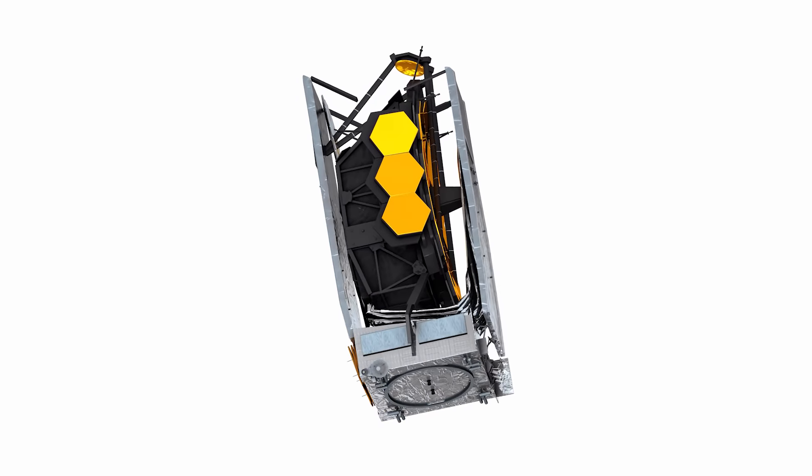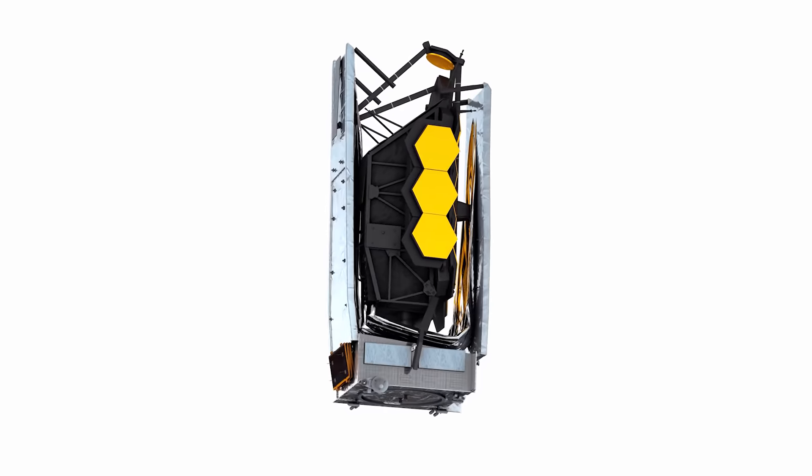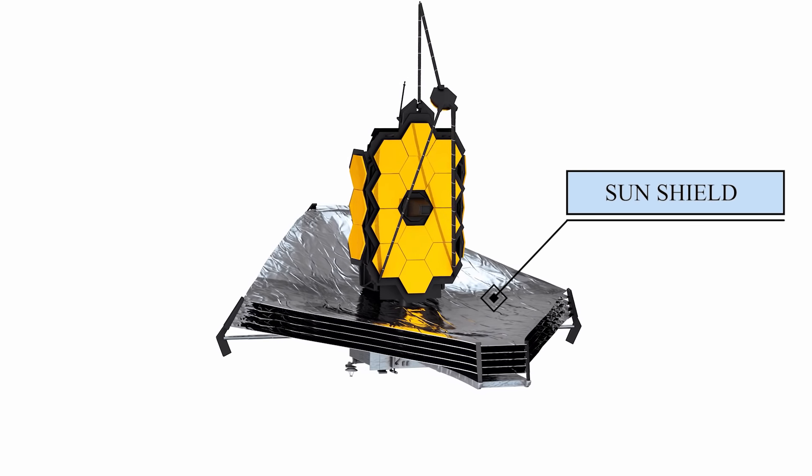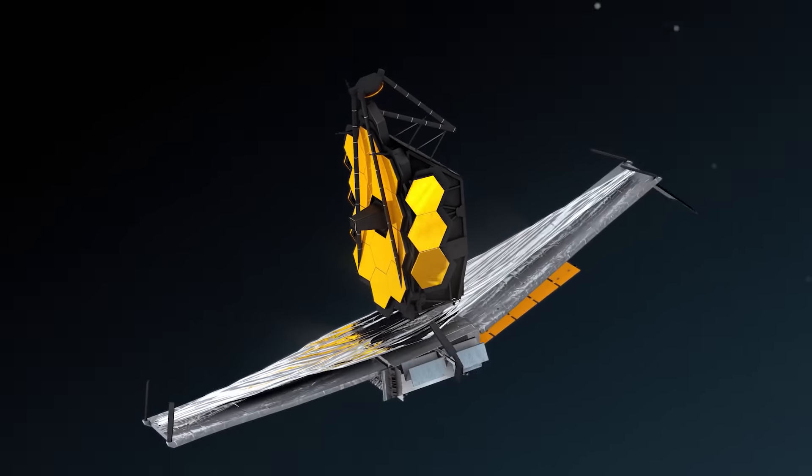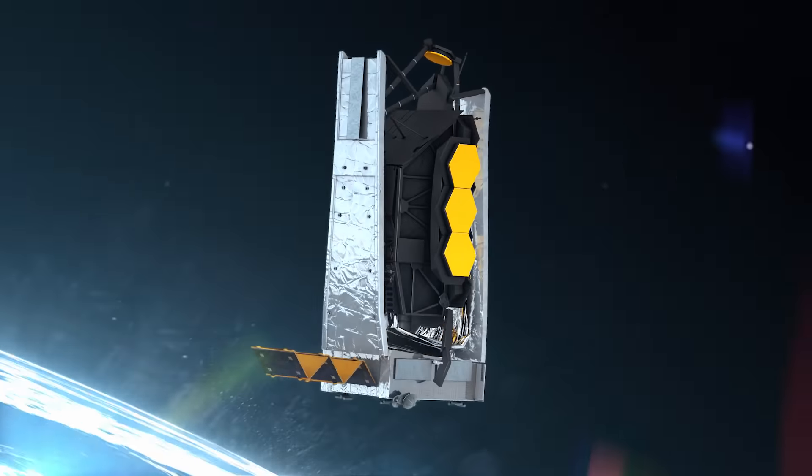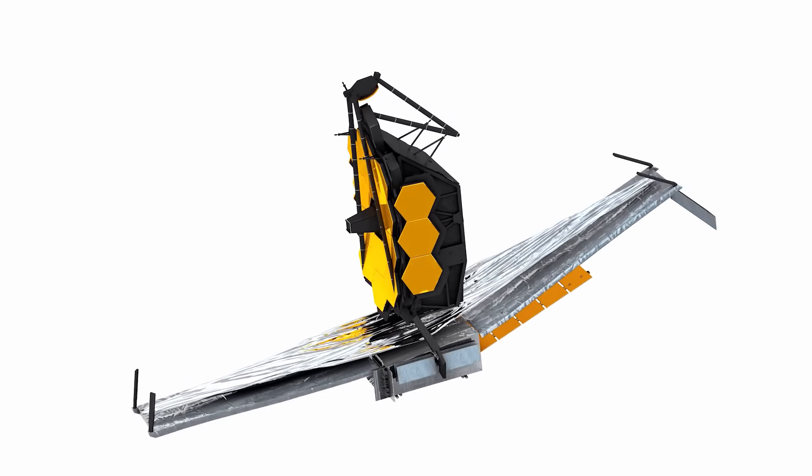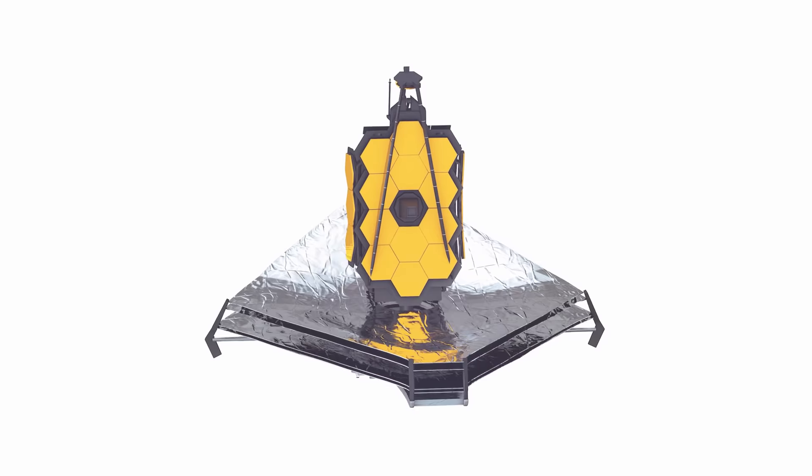The Webb Telescope must be kept cool at all times. A five-layer sun shield the size of a tennis court is responsible for this accomplishment. This mechanism was folded up when Webb launched on Christmas Day, but it was successfully deployed less than two weeks later, thanks to the deployment of the shield's skinny layers.